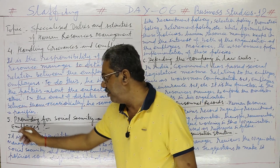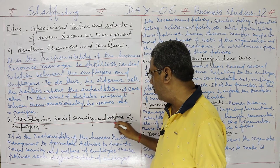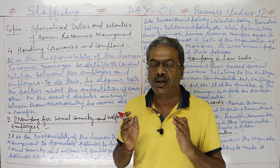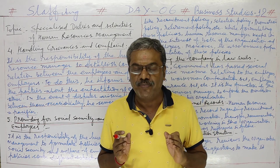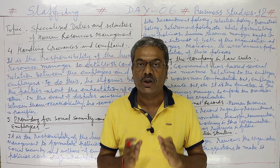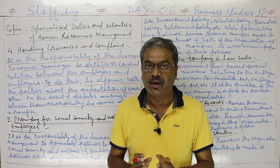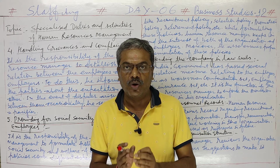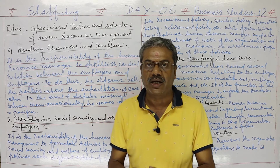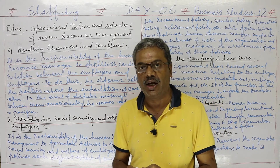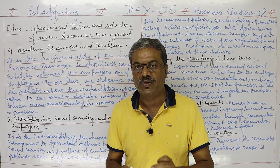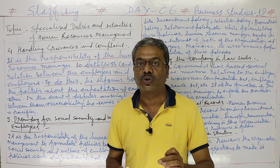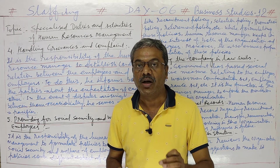Activity Number 5: Providing for Social Security and Welfare of Employees. The work of Human Resources Management also includes providing social security and welfare to employees working in the organization.